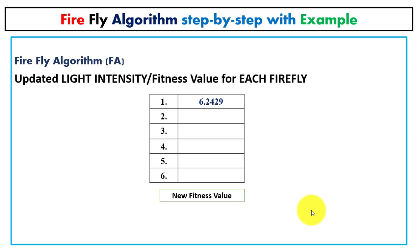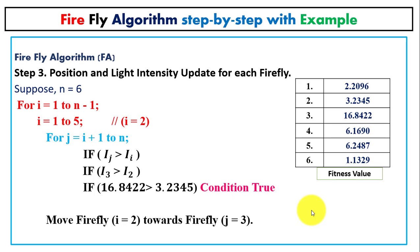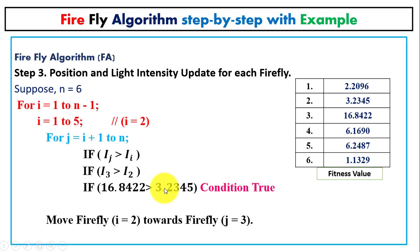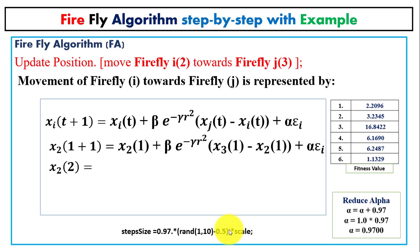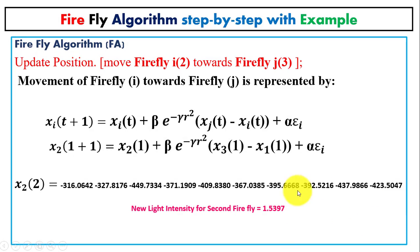Now we check conditions for the second firefly: i=2, j=3. The light intensity at index 3 is 16.8422 and at index 2 is the corresponding value. The condition is again true, so firefly i moves toward firefly j. We compute the distance, attractiveness, and new position, obtaining the new fitness value (light intensity) for the second firefly.